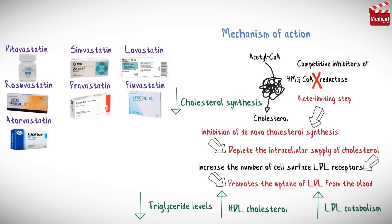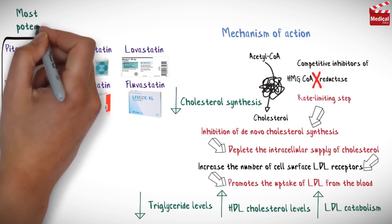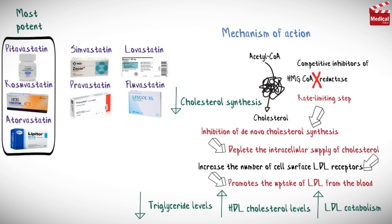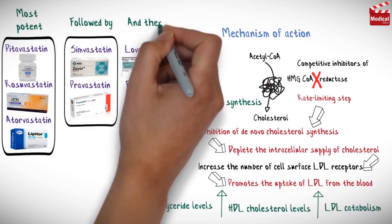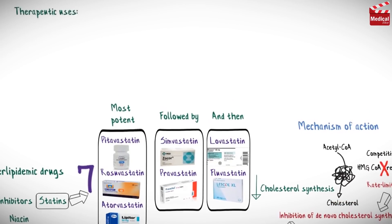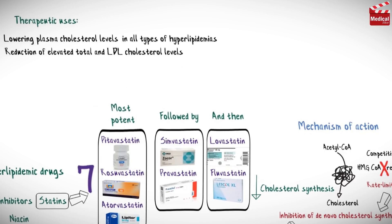These agents also decrease triglyceride levels and may increase HDL cholesterol levels in some patients. In terms of potency, pitavastatin, rosuvastatin, and atorvastatin are the most potent LDL cholesterol-lowering statin drugs, followed by simvastatin and pravastatin, and then lovastatin and fluvastatin. These drugs are effective in lowering plasma cholesterol levels in all types of hyperlipidemia, and reduce elevated total and LDL cholesterol levels to slow progression of coronary artery disease along with diet and exercise.